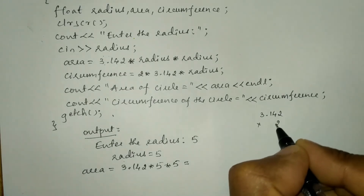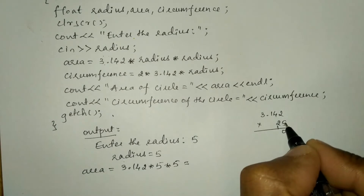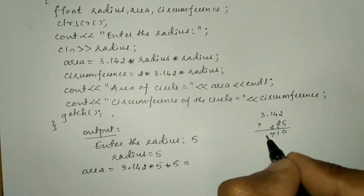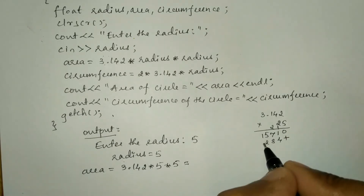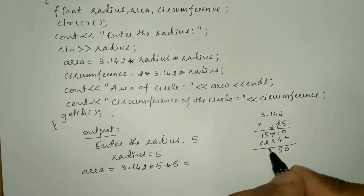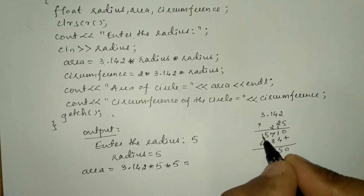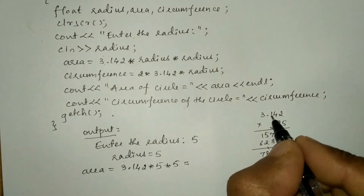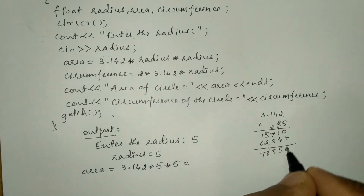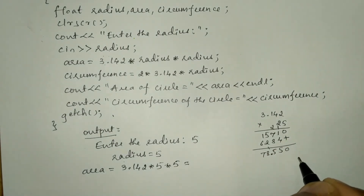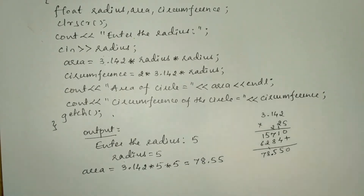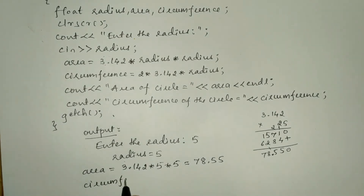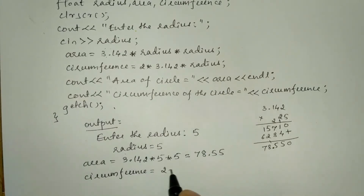Calculating 3.142 * 25: working through the multiplication step by step gives us 78.550. Since we have three digits after the decimal point in 3.142, we place the decimal accordingly, giving 78.55. So the value of area is 78.55.